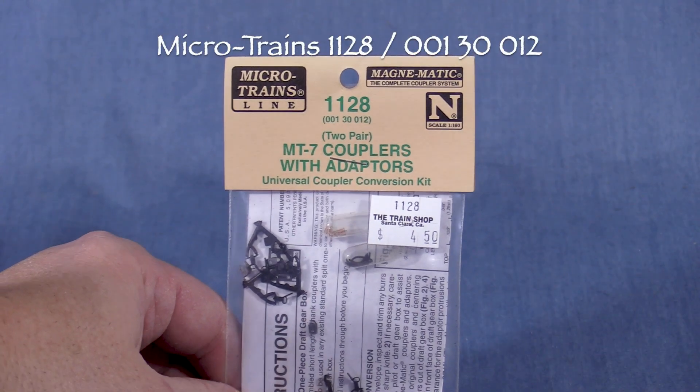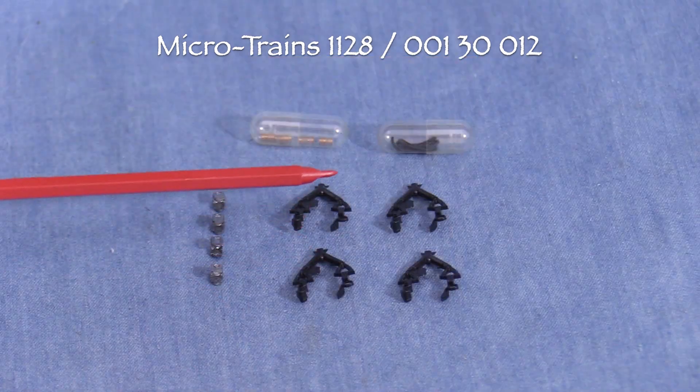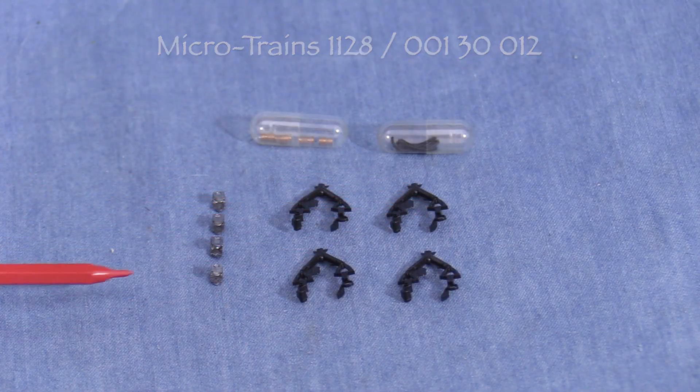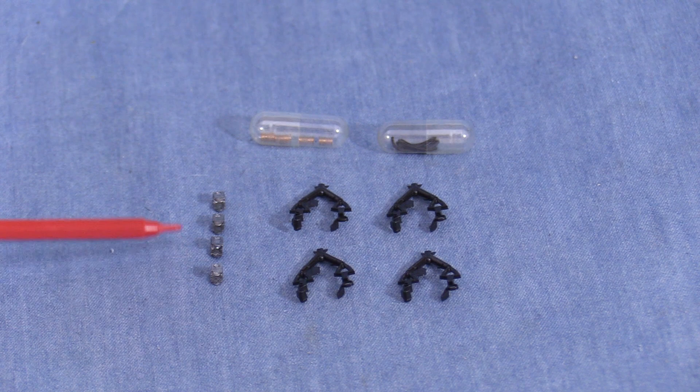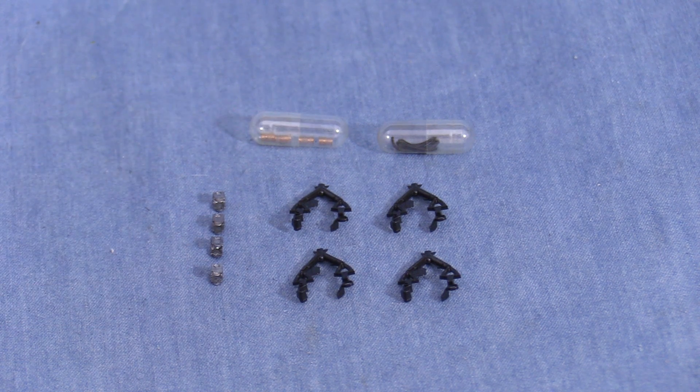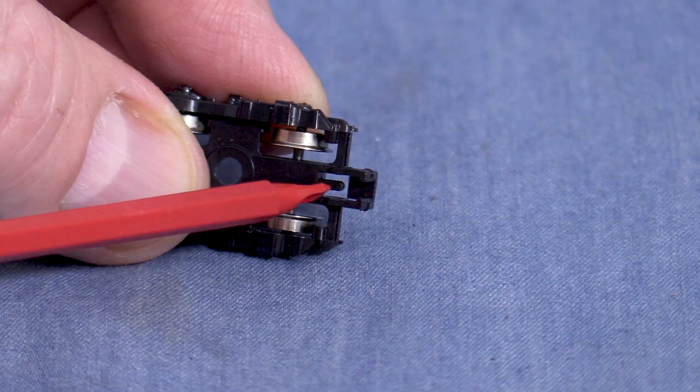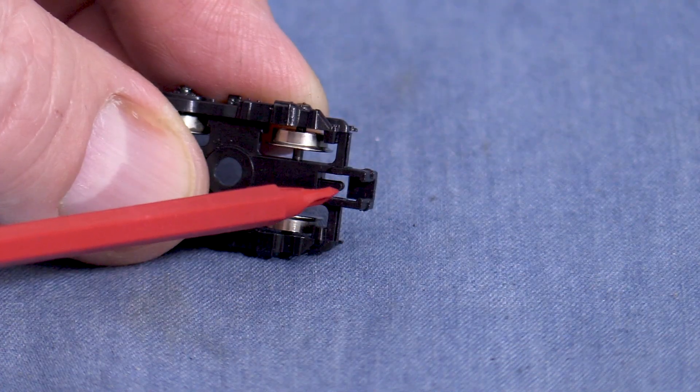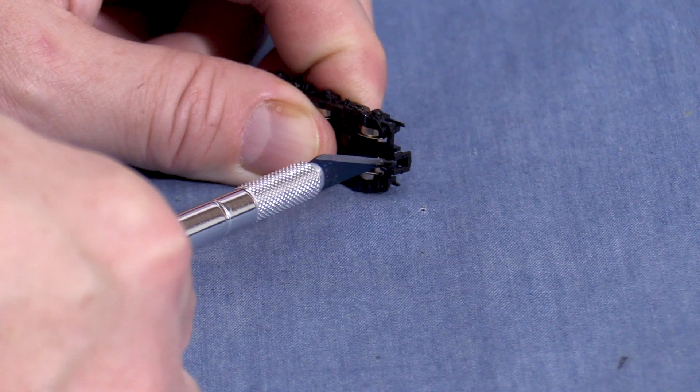Microtrain's recommends set 1128 for the B unit. This kit has couplers, draft gear box adapters, springs, and trip pins. In order to fit the draft gear box adapter, I'll need to shorten the pin on the truck that held the old coupler spring.